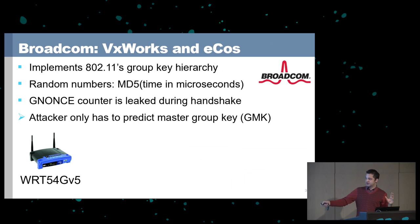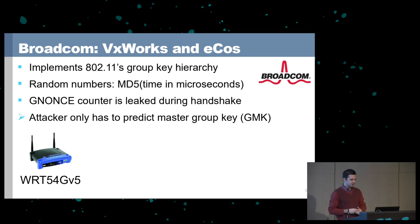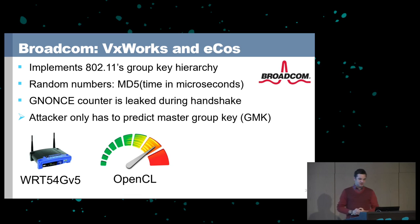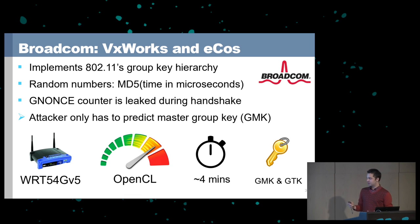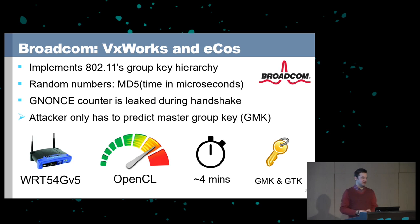One popular vulnerable router is the WRT-54. Version 5 and higher uses a VxWorks kernel, while version 4 and lower runs Linux. If you run DD-WRT you're also fine. I only had older versions at home so I simulated this attack using OpenCL, and even with modest assumptions I estimate around 4–5 minutes on my GPU to crack it. Taking the MD5 of the current time in microseconds is simply not sufficient to collect enough randomness.